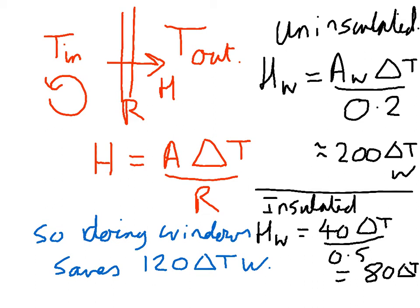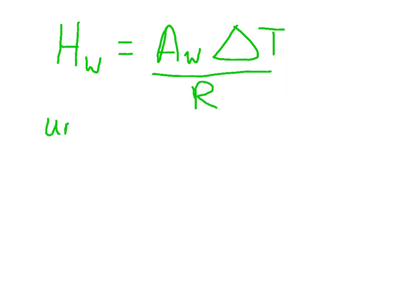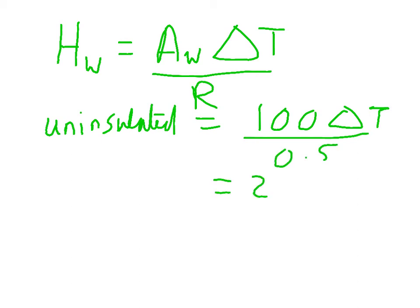But now let's see how much we save from the walls. So the heat getting out through the walls is equal to the area of the walls, delta T over the R. So uninsulated equals 100 delta T over 0.5 equals 200 delta T watts. So the same as getting out through the windows.